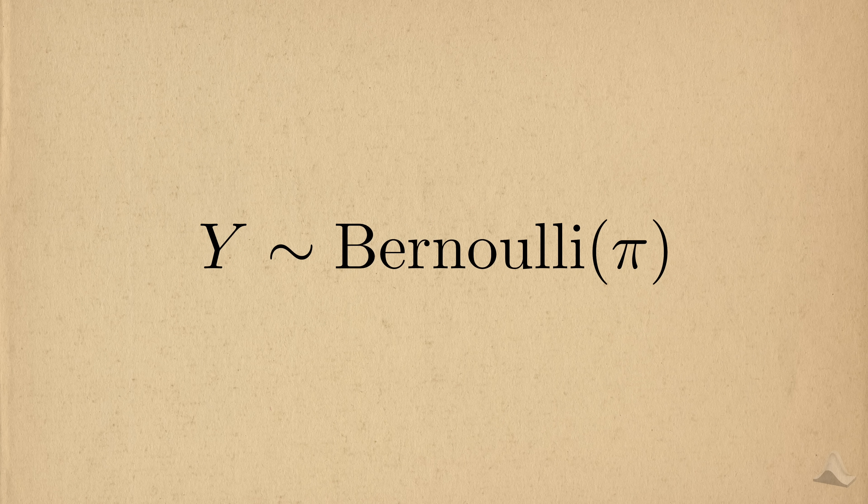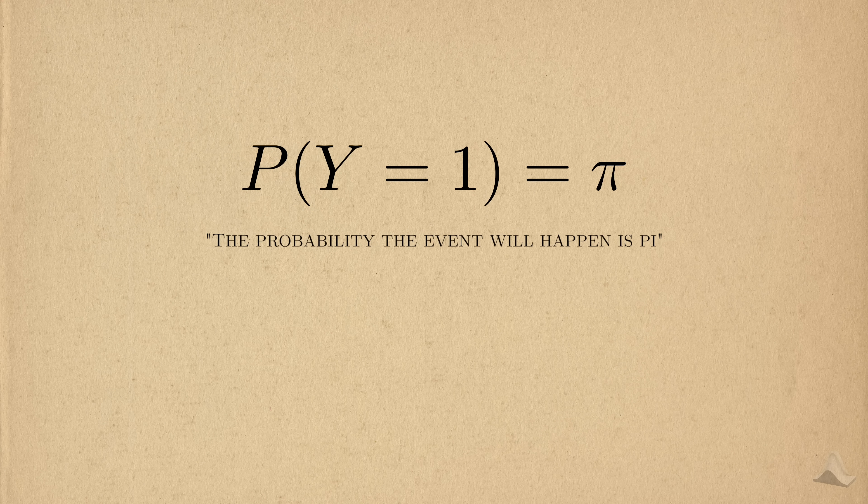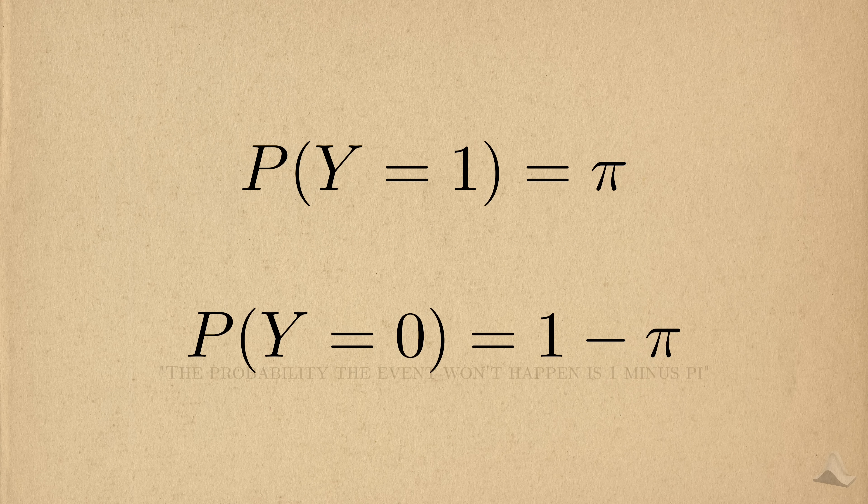When we work with binary events, we often model them using Bernoulli random variables. That is, the event will happen, or succeed, with probability pi, and by extension, will fail, with probability 1 minus pi.